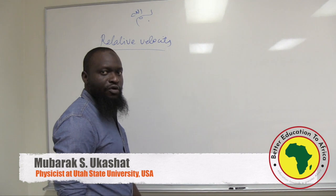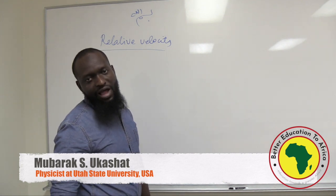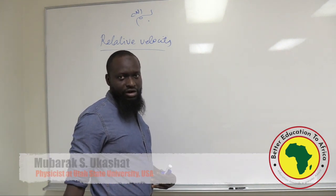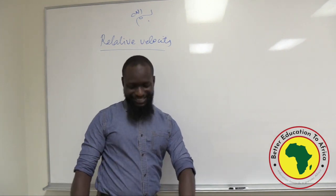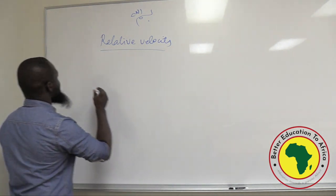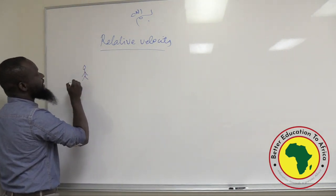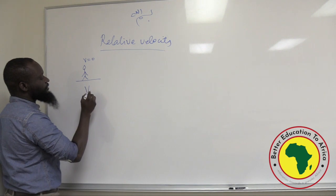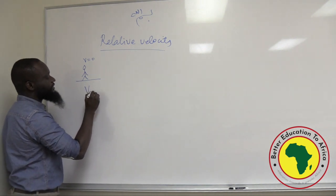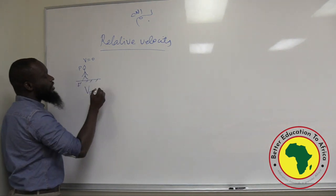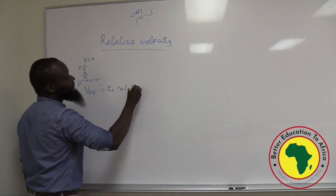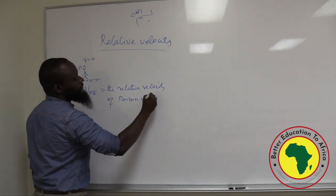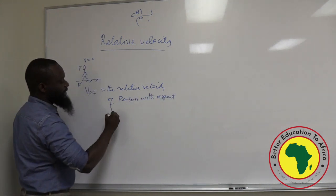But if I am moving, I move with my Reference Frame, so I have left the floor behind. The floor has its own Reference Frame and I am moving in a different Reference Frame. So my velocity with respect to the floor is the velocity with which I am moving, because the floor is seen to be static — it is at rest. My velocity with respect to the floor is known as V-Person-Floor. This is called the Relative Velocity of Person with respect to Floor.